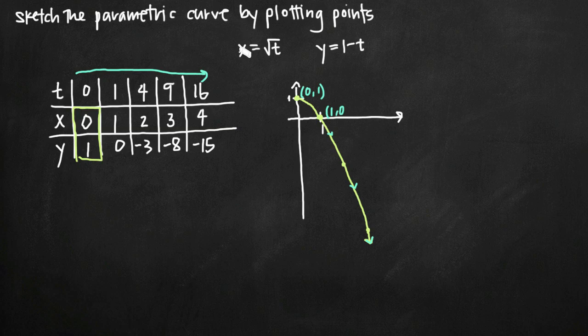So to solve this for t, we'll go ahead and square both sides, and we'll get x squared equals t, right?